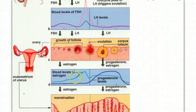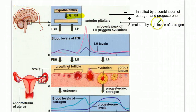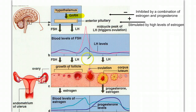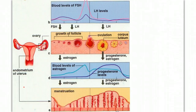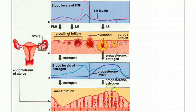At some point, the level of estrogen reaches a peak. That peak in estrogen levels has a positive stimulating effect on the anterior pituitary, causing a surge in release of LH and FSH. This spike in LH stimulates ovulation. Notice that ovulation occurs at a time when the endometrium wall has built up, to ensure that if the egg is fertilized, it implants in a very thick endometrium wall.